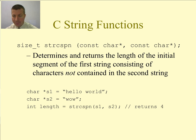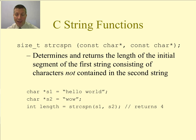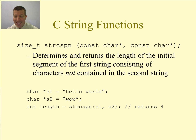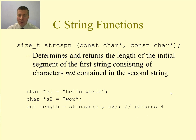strcspn determines and returns the length of the initial segment of the first string consisting of characters not contained in the second string. For example, if string S1 is 'hello world' and string S2 is 'wow', it checks each character of S1: H is not in 'wow', E is not in 'wow', L is not in 'wow', L is not in 'wow', but O is in 'wow'. So it returns 4.